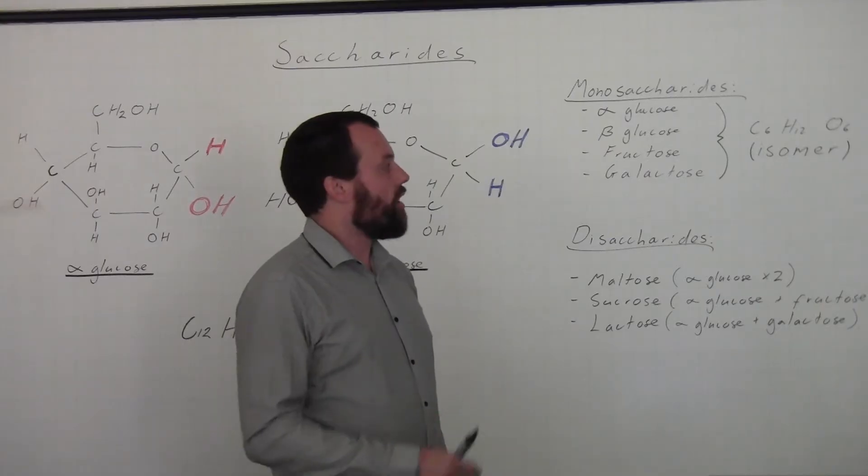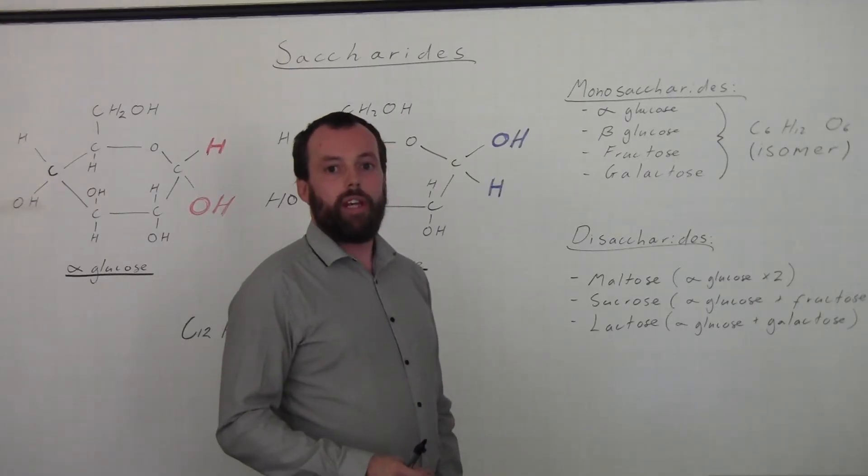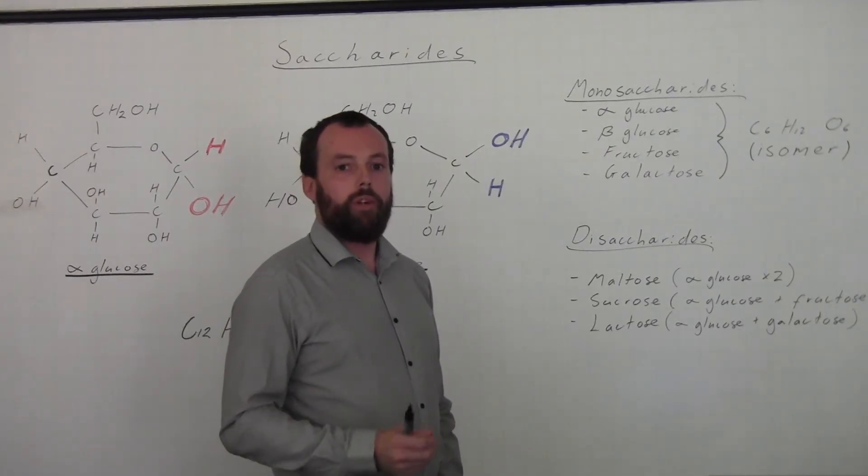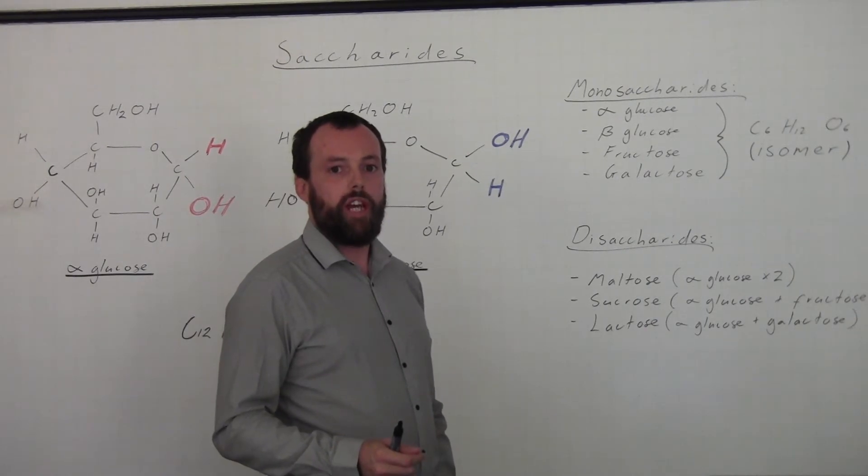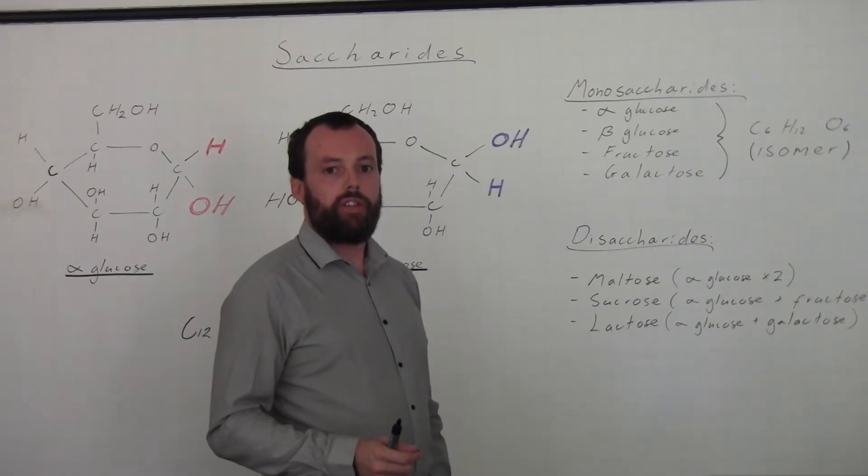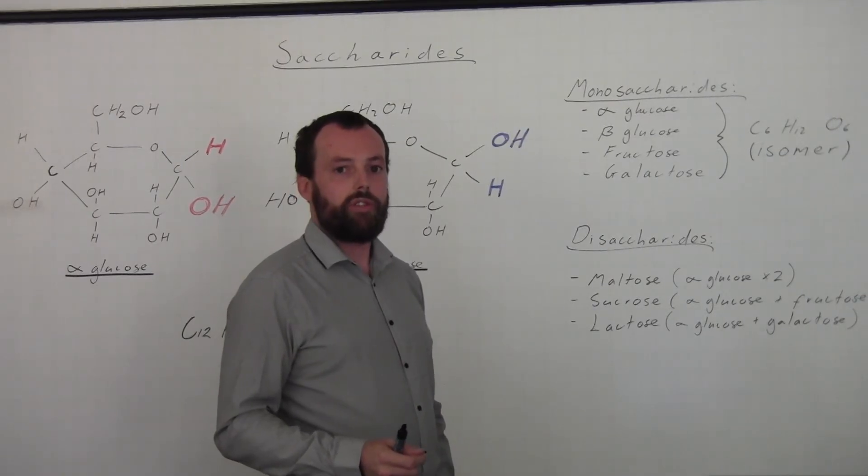Due to this, we say that they are isomers, meaning they have the same chemical formula but a different structural arrangement. When we join each of these monosaccharides together, we form what's called a disaccharide. Disaccharide meaning two.